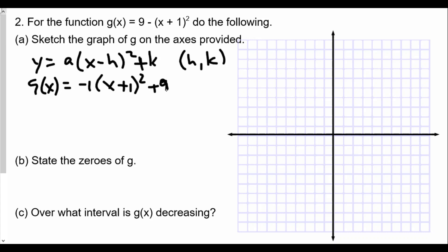A couple of things when we take a look at the graph: our vertex, if it's x minus h, our h value should be -1 because x minus negative 1 is x plus 1. Our k value is 9, so our vertex is at (-1, 9). The second thing is a = -1.